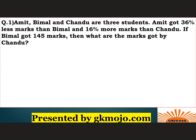Let's have a look at the first question. Amit, Bimal and Chandu are three students. Amit got 36 percent less marks than Bimal and 16 percent more marks than Chandu. If Bimal got 145 marks, then what are the marks got by Chandu? Amit got 36 percent less marks than Bimal and Bimal has got 145 marks. So Amit's score would be 64 upon 100 into 145.